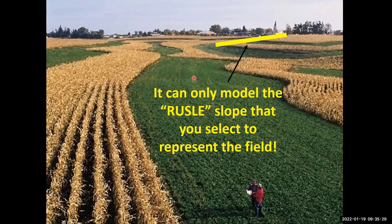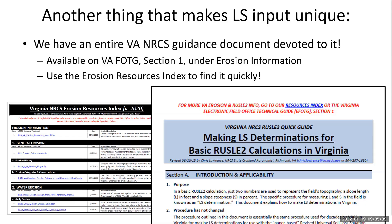You could potentially break this landscape into different areas and do different computations, but if you're going to do one computation, this is the challenge you face. Another thing that makes the LS input unique is that we have an entire Virginia NRCS guidance document devoted specifically to helping you make these LS determinations, and that's what I'm going to focus on for the rest of this lesson.